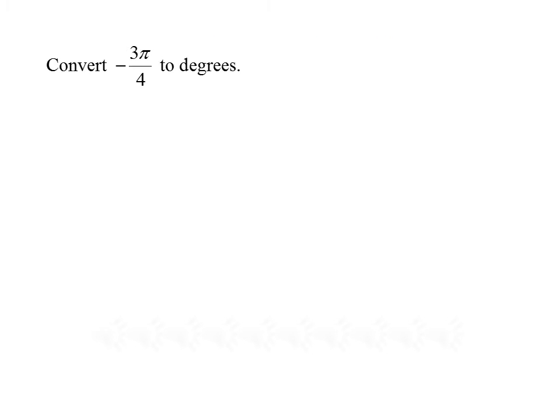Let's convert negative 3π over 4 radians into degrees. We start with negative 3π over 4 radians and multiply by 180 over π. That multiplication gives us negative 540π divided by 4π. Pi cancels from numerator and denominator, and negative 540 divided by 4 gives us negative 135 degrees.